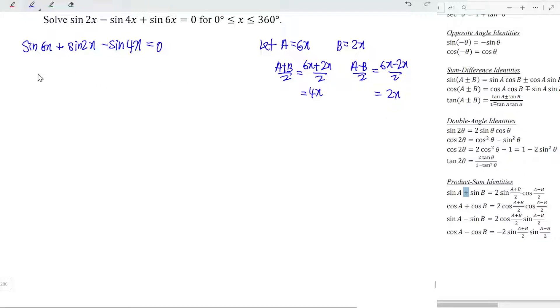Now let's substitute using the formula. We should have 2 sine of A plus B divided by 2, which is 4x, times cos of A minus B divided by 2, which is 2x, and we minus sine 4x. This should be equal to zero. Now let's factorize the common term, so we have sine 4x times 2 cos 2x minus 1 equals zero, which means we should have two possibilities here: sine 4x equals zero, and 2 cos 2x minus 1 equals zero.